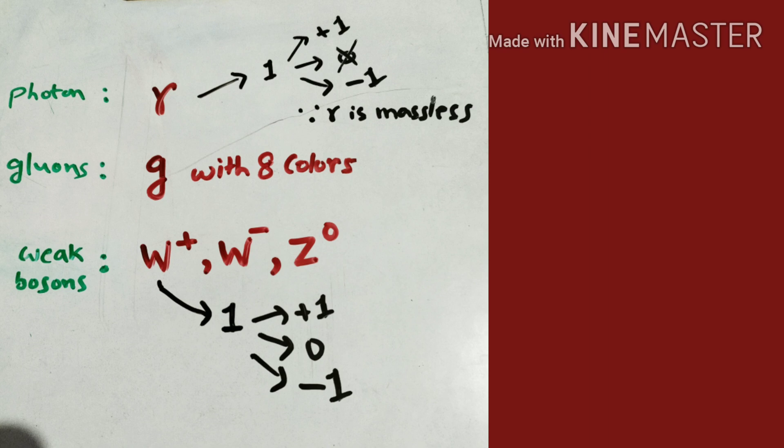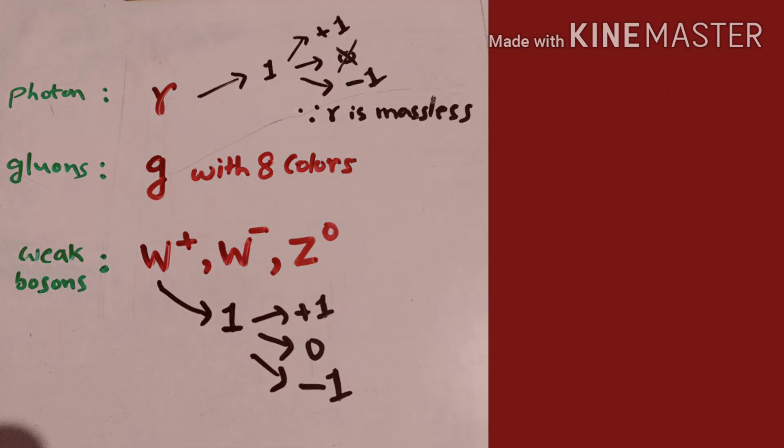The next mediators are the weak bosons: W-plus, W-minus, and Z-zero. W-plus has mass, W-minus has mass, and Z-zero also has mass. Therefore, these particles will have all three components: plus-1, 0, and minus-1. So W-plus, W-minus, and Z-zero all have three spin orientations.